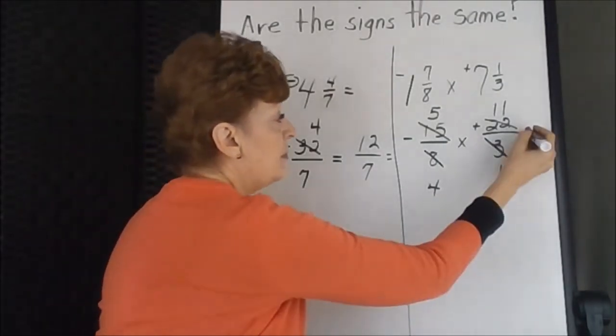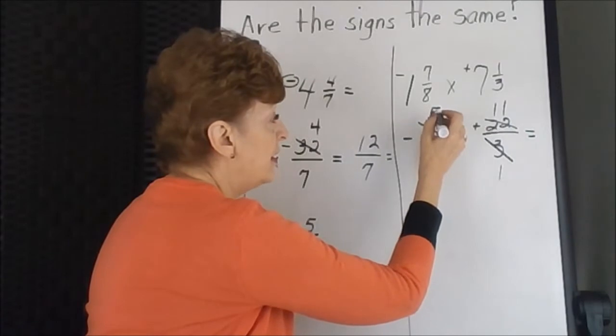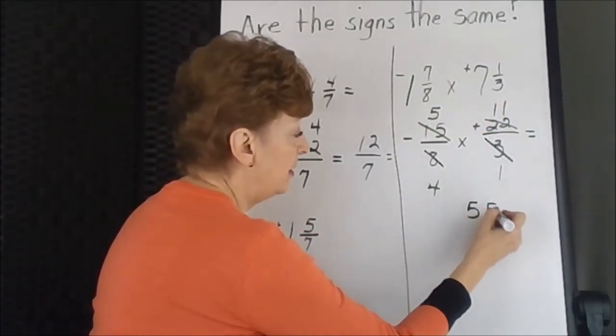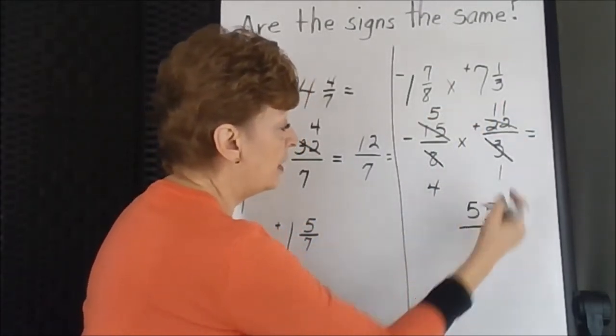So we're ready to actually multiply our numerators. 5 times 11 is 55. 4 times 1 is 4.